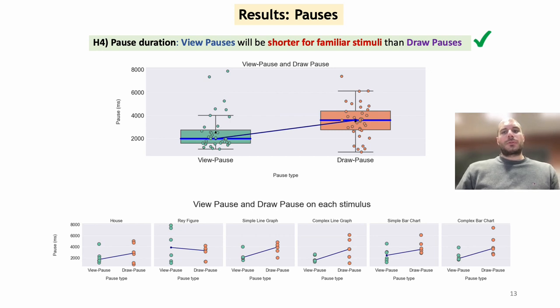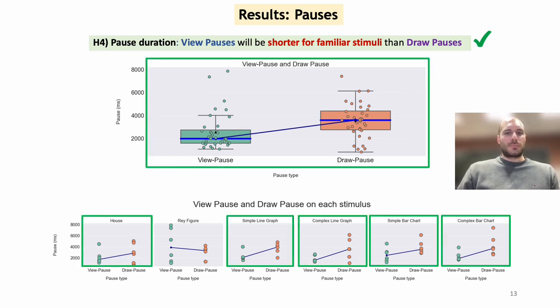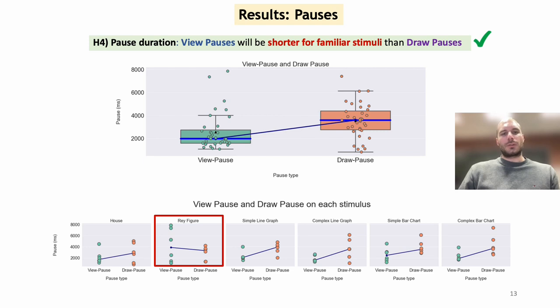We also confirmed the fourth hypothesis, because the median value for the view pause was smaller than the draw pause for all the familiar stimuli. The only exception is represented by the ray figure, where the median value for the view pause was longer than the draw pause.